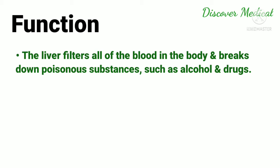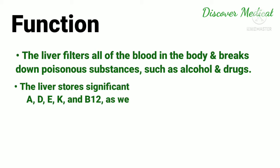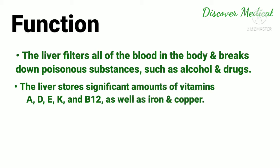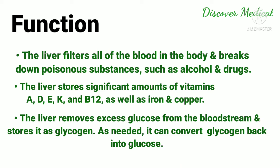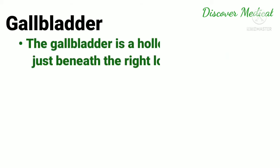The liver filters all of the blood in the body and breaks down poisonous substances such as alcohol and drugs. The liver stores significant amounts of vitamins A, D, E, K, and vitamin B12, as well as iron and copper. The liver also removes excess glucose from the bloodstream and stores it as glycogen; as needed, it can convert glycogen back into glucose.